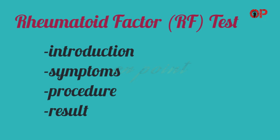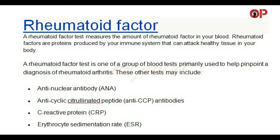Welcome to On Point. In this video we are going to discuss the rheumatoid factor test. A rheumatoid factor test measures the amount of rheumatoid factor in your blood. Rheumatoid factors are proteins produced by your immune system that can attack healthy tissue in your body. This test is one of a group of blood tests primarily used to help pinpoint a diagnosis of rheumatoid arthritis.